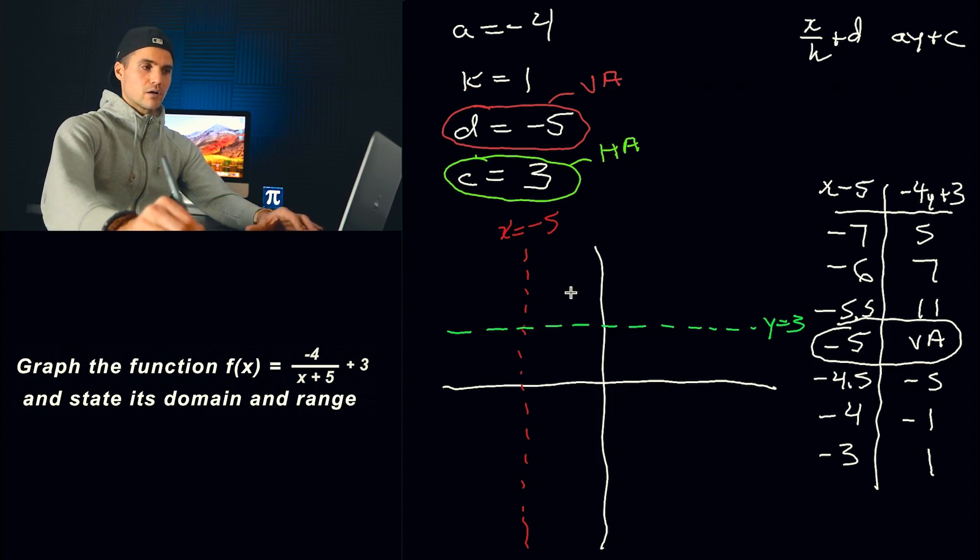So we got negative 7 and 5. That's going to be like, let's say right there. Then we got negative 6 and 7. That's going to be like, let's say here. And then negative 5.5 and 11. That's going to be up here. Again, this is not to scale. If you were to take this and draw it on graph paper, your diagram would be more to scale than mine. But just giving you a general description of what this graph is going to look like.